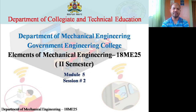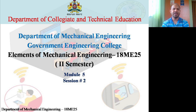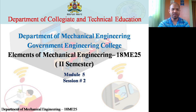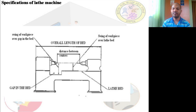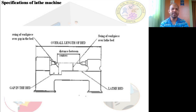Welcome to the second session of Module 5. In the previous class we discussed what mission tools are and the different types of mission tools. We also had a small introduction to the lathe. Basically, the lathe is a machine tool that rotates a workpiece about an axis of rotation to perform various operations such as cutting, sanding, knurling, drilling, deformation, facing, and turning, with tools applied to the workpiece to create an object with symmetry about its own axis.